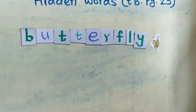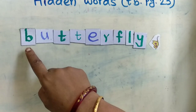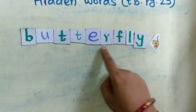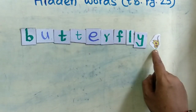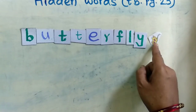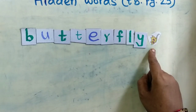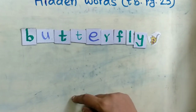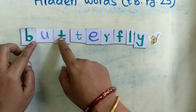We will see one more word: B-U-T-T-E-R-F-L-Y, butterfly. Butterfly sits on flowers. Now which words are hidden in this?